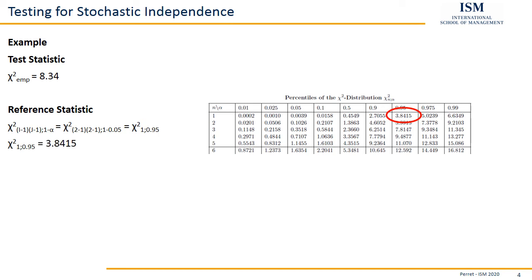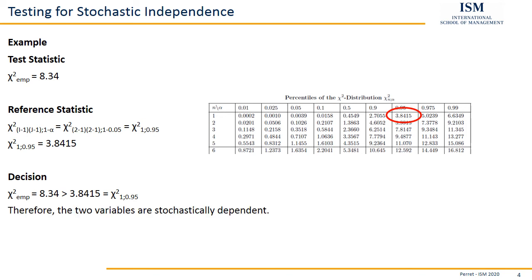For the decision, we simply compare the test statistic and the reference statistic. We see that the test statistic of 8.34 is larger than the reference statistic of 3.8415. As I said, whenever the test statistic is larger, this means stochastic dependence. So both variables have something in common — they are stochastically dependent.